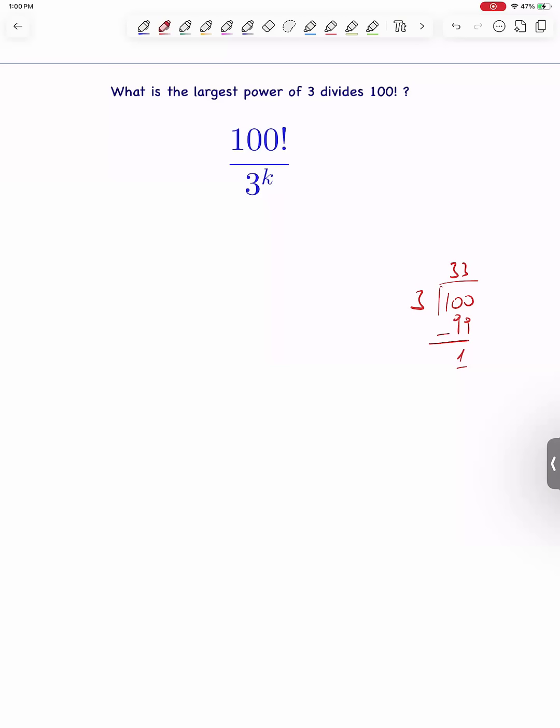Some of the multiples of 3 are multiples of 9. They give an extra factor 3, so we divide the quotient by 3 to find how many multiples of 9 are there. 33 divided by 3 is 11, remainder is 0.